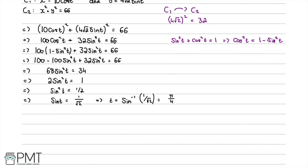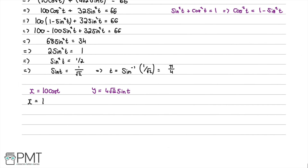We now substitute t = π/4 back into the parametric equations to find the coordinates of S. For x: x = 10cos(π/4) = 5√2. For y: y = 4√2·sin(π/4) = 4. So the x-coordinate is 5√2 and the initial y-value comes out as 4.